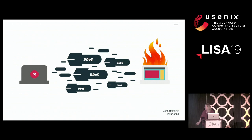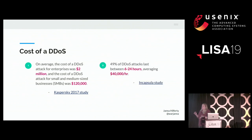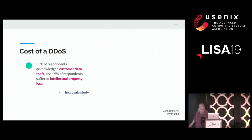DDoSes are not cheap. Kaspersky's 2017 study found that for small and medium-sized businesses, you're looking at about $120,000 on average if you're DDoSed, and even bigger for enterprises at about $2 million on average. An Encapsulist study showed that about 50% of DDoS attacks last between 6 and 24 hours, costing about $40,000 per hour. That same study showed that one in three targeted sites acknowledged customer data was breached, and about one in five acknowledged that intellectual property was lost.